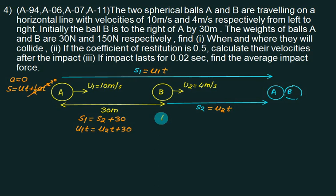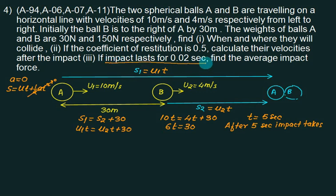What is U1? U1 is 10. What is U2? U2 is 4. This means 6t equals 30, so t equals 5. This means after 5 seconds, impact takes place. Whereas impact lasts for 0.02 seconds. This was a different idea. How much time the body A requires to cover and make an impact to body B equals 5 seconds. This one is a different idea.